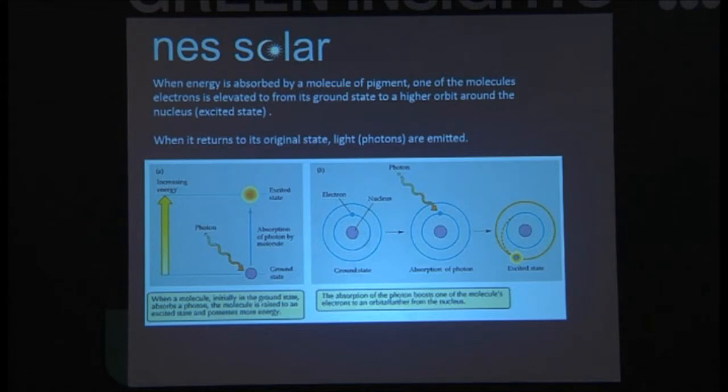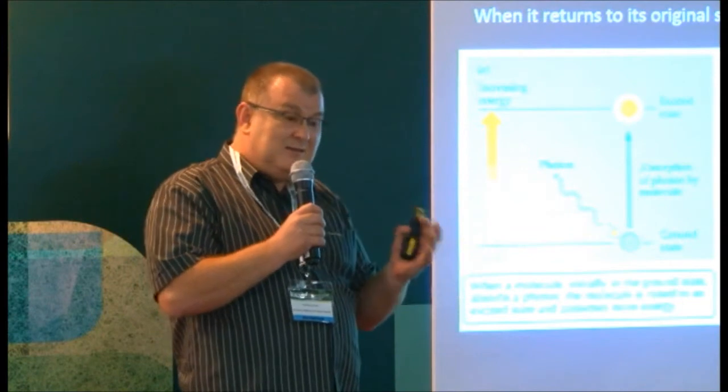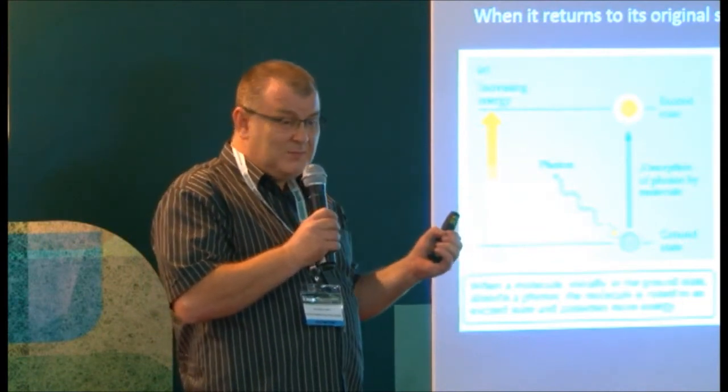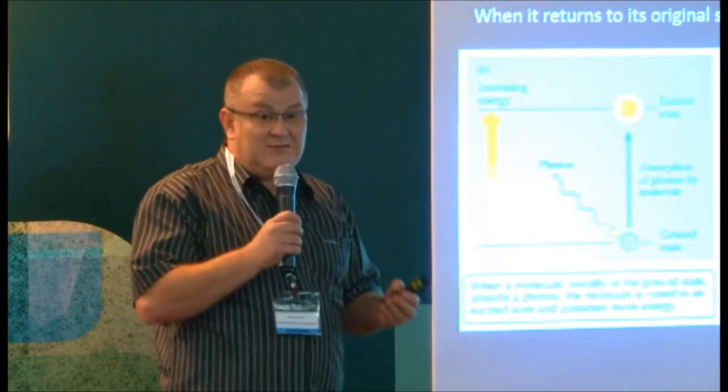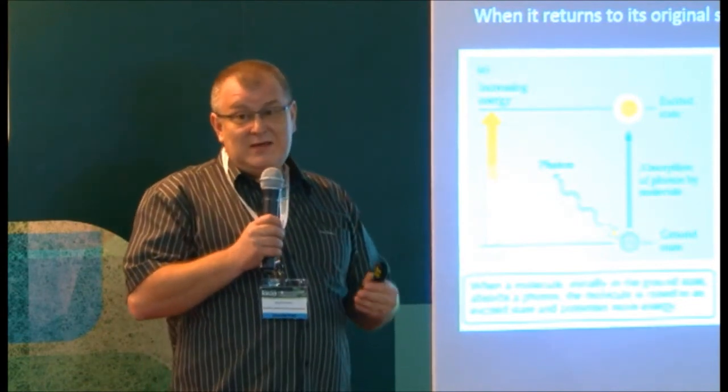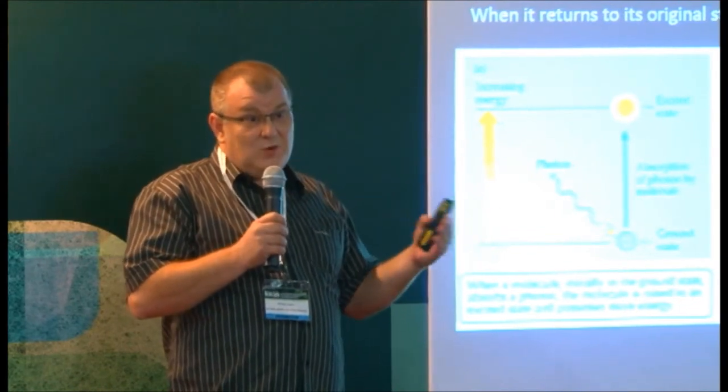So how does it work? Well, basically, when energy is absorbed by a molecule of pigment, one of the molecule's electrons is elevated from its ground state to a higher orbit. So basically, a photon will actually enter the pigment, and that photon then gets excited. As it gets excited, the energy within that coating basically emits photons, so it emits light. So what we're actually doing is we're generating light from heat. The same way that a photo cell generates electricity from the sun, we're generating additional light.